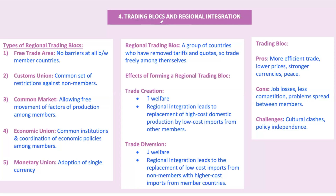Let's get into some key examples and types. We've got a couple of big players: the North American Free Trade Agreement, NAFTA, the trade trio of the US, Canada, and Mexico; and the European Union. There are four types of regional trading blocks. First, a Free Trade Area, or FTA: member countries agree to eliminate tariffs, quotas, and other trade barriers among themselves while maintaining their own trade policies with non-members. NAFTA — now USMCA — is a classic example with the US, Canada, and Mexico.